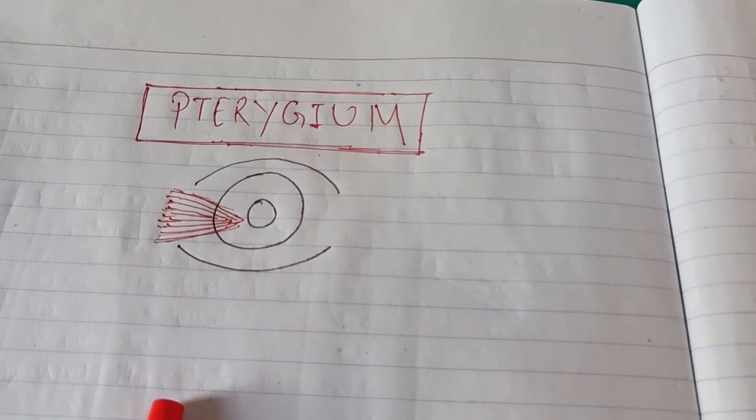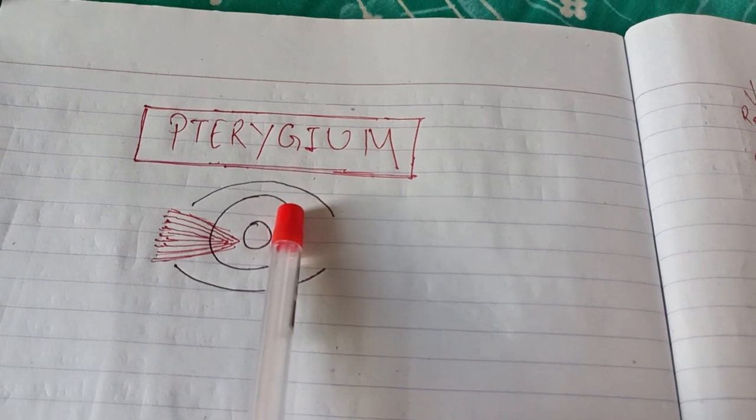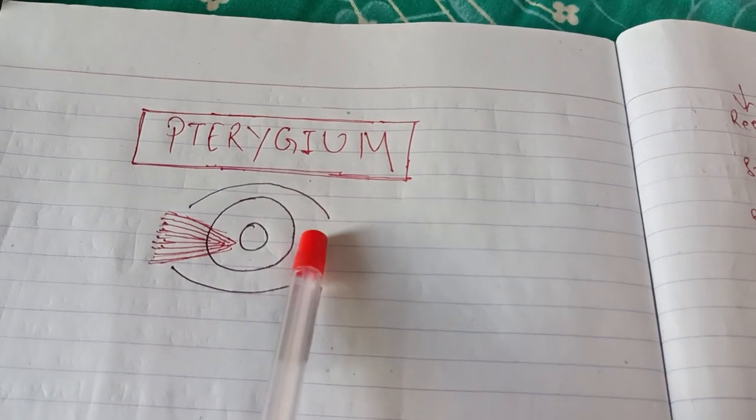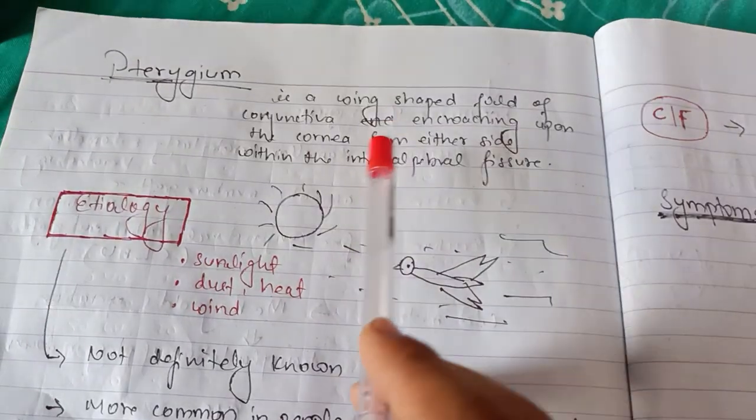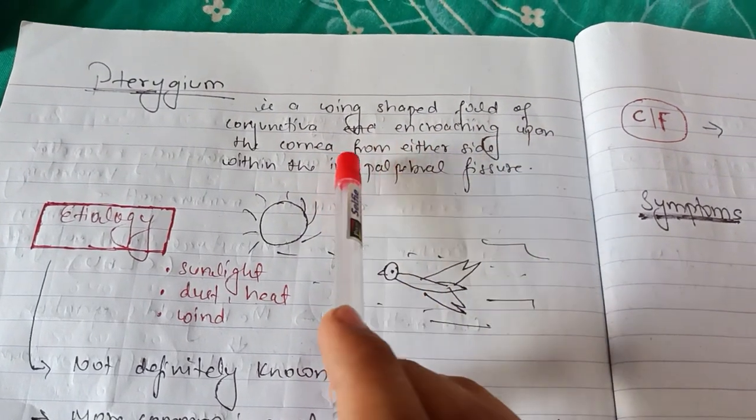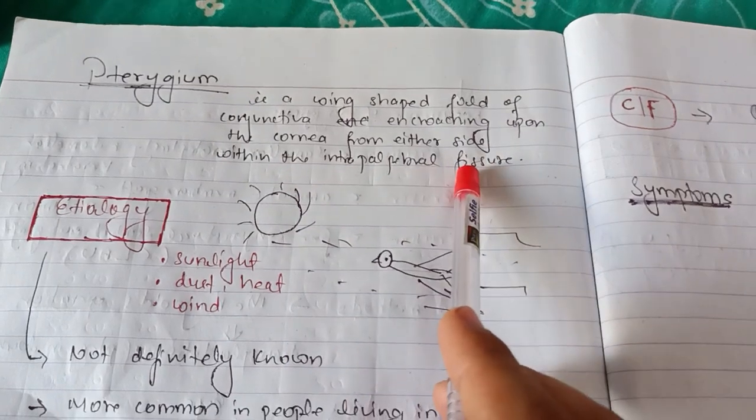Hello people, how are you? I hope all of you are fine. Today we are going to discuss pterygium: its definition, etiology, pathology, classification, parts, types, and medical management. So what is pterygium? Pterygium is a wing-shaped fold of conjunctiva encroaching upon the cornea from either side within the interpalpebral fissure.